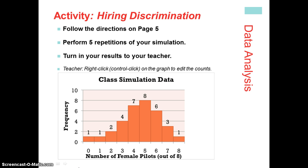Here we have an example from our textbook on page five about discrimination. Make sure if you haven't already read that example, pause the video now, go read it, and then come back. What we end up doing is running a simulation — five repetitions — and then sharing our data so we can graph it. This graph demonstrates the distribution of the simulated data from the class showing the number of female pilots. On the vertical axis we have frequency, and on the horizontal we have the variable.